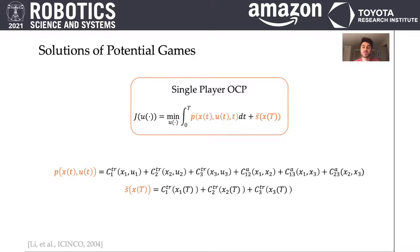Now that we cast our interactive trajectory planning problem as a single-player optimal control problem, we can use any existing trajectory optimization algorithm to solve for the equilibria of our game. In our work, we used the iterative LQR algorithm for its success in many robotics applications.